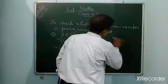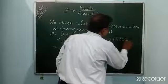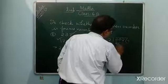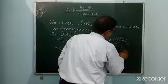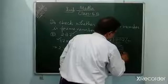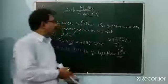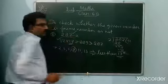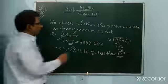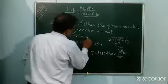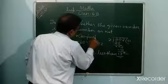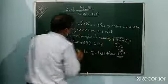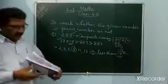287 divided by 7: 7 into 28 is 4, and 7 into 7 is 1, so 287 is divisible by 7. Therefore 287 is not a prime number — it is a composite number, meaning not a prime number.